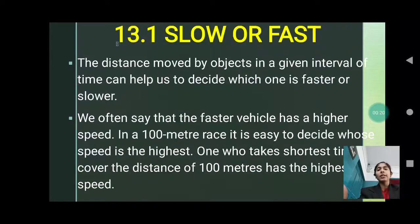Slow or fast? This is our first topic. The distance moved by any object in a given interval of time can help us to decide which one is faster and which one is slower. We have to observe the timing as well as the distance. Then we will know which one is faster vehicle and which one is a slower vehicle.